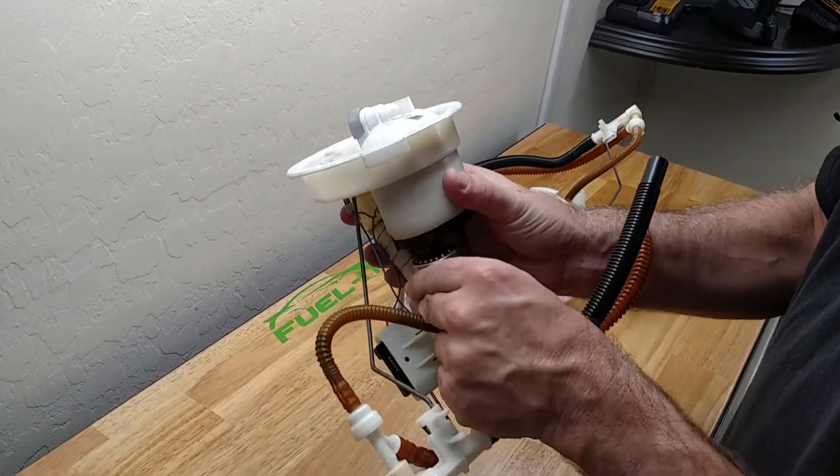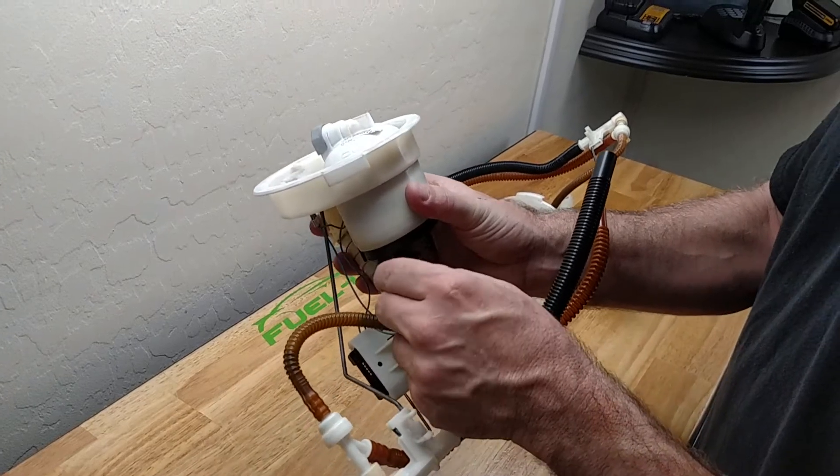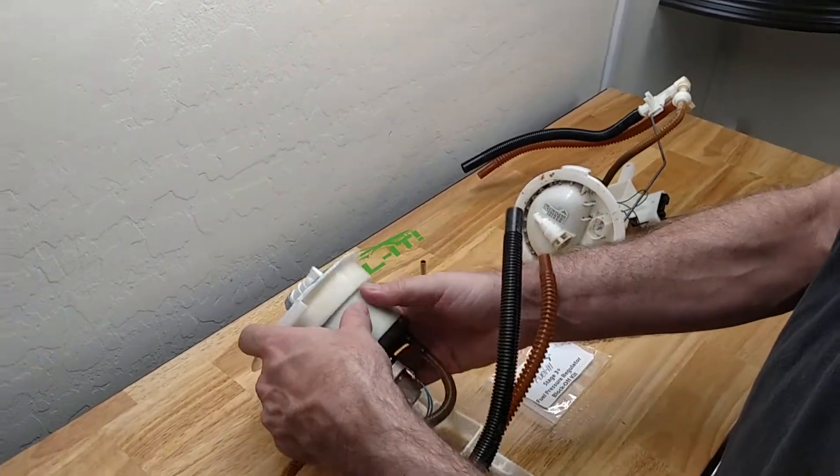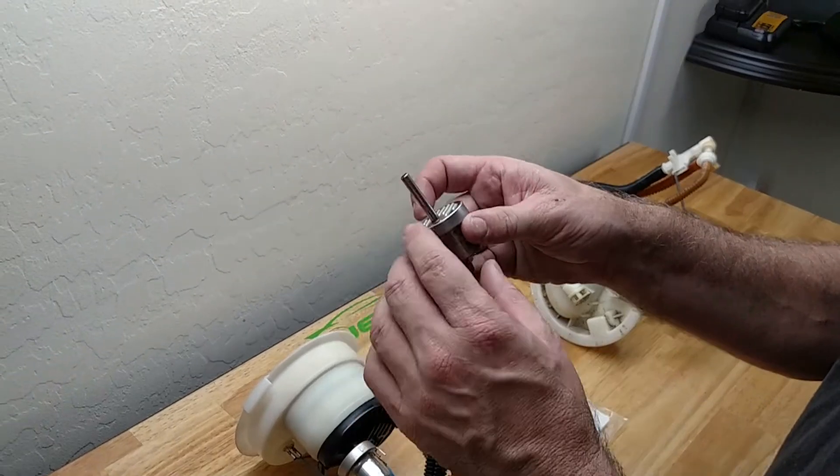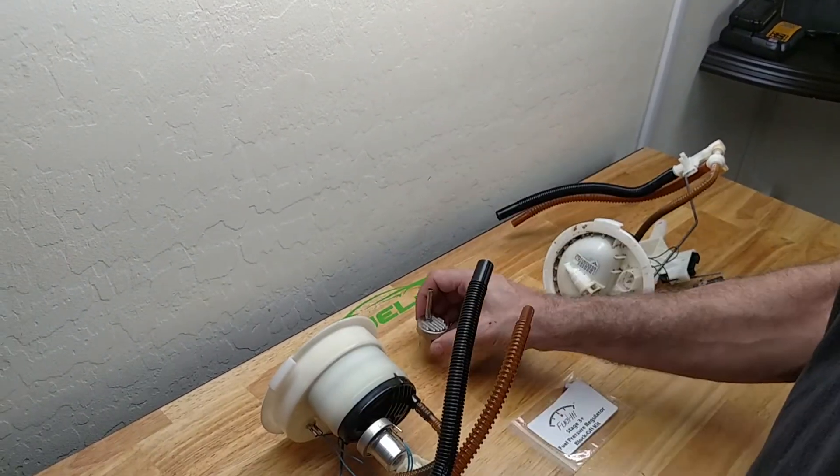You'll then pull down and rotate the fuel pressure regulator and this tube will work its way out of there. As you see, it's fairly long so just keep working it out.